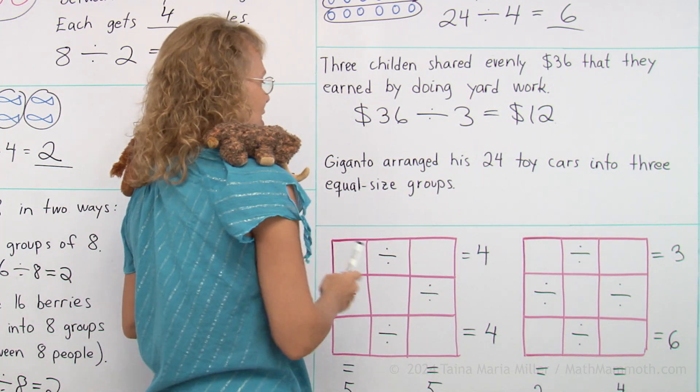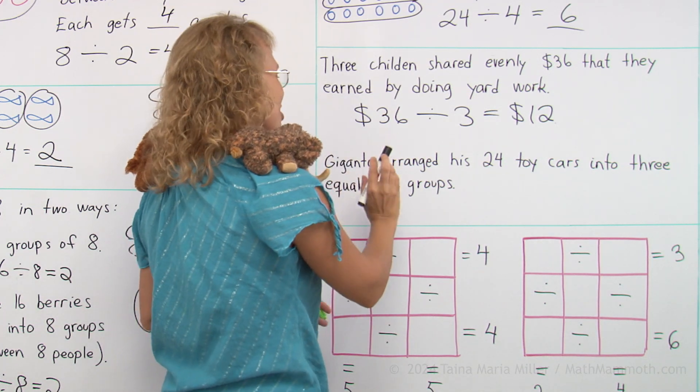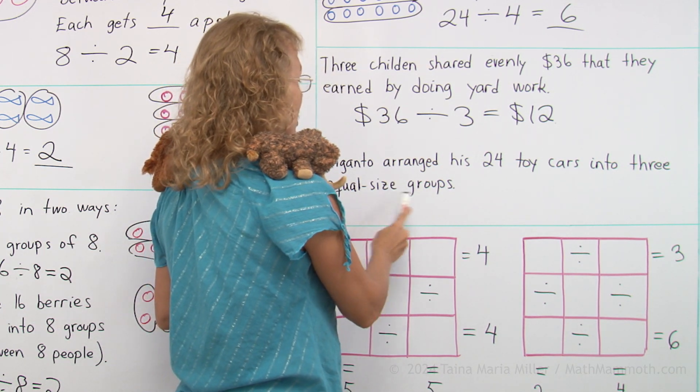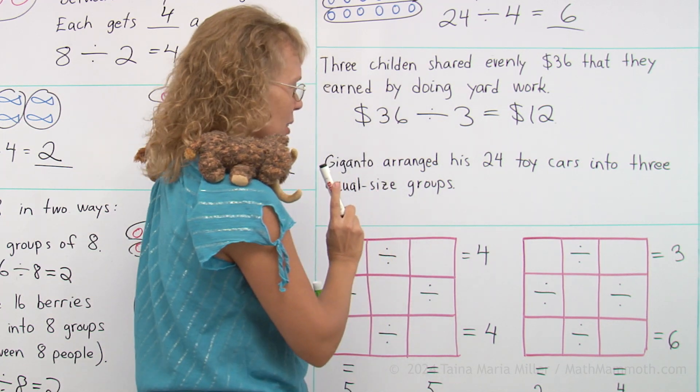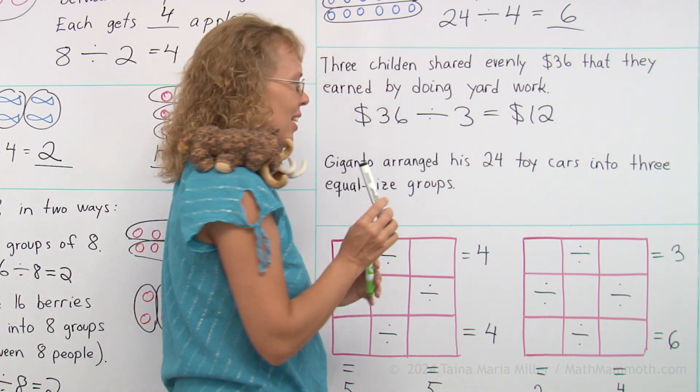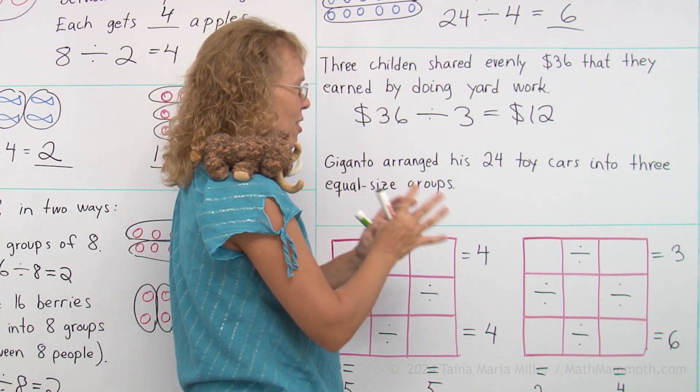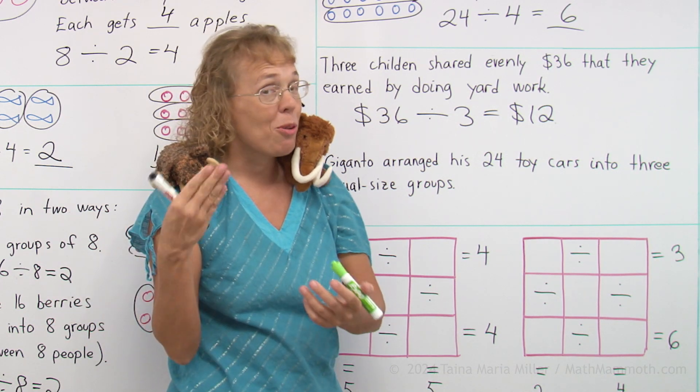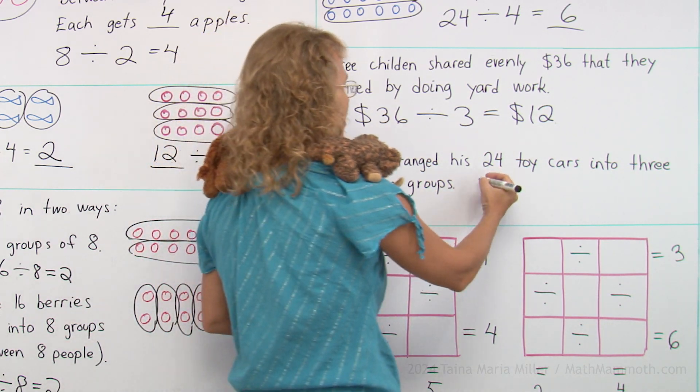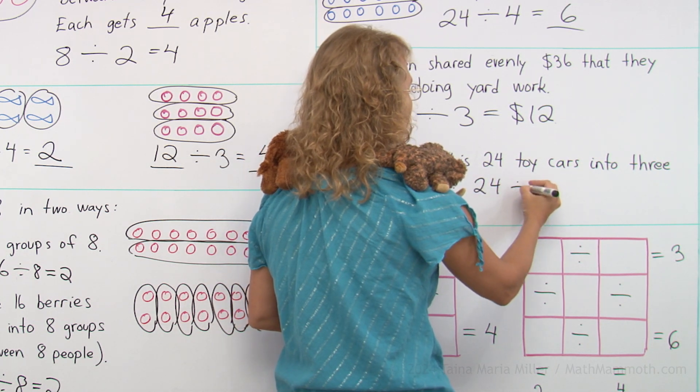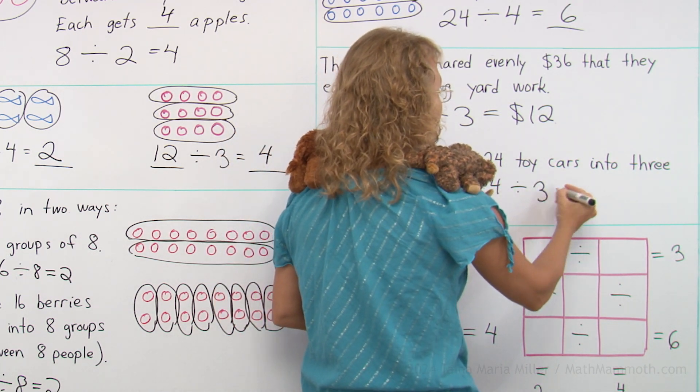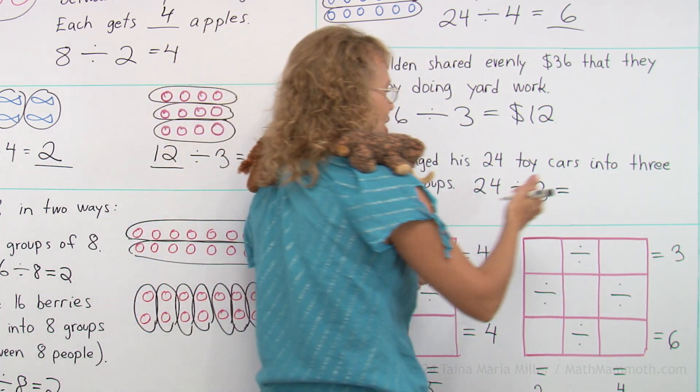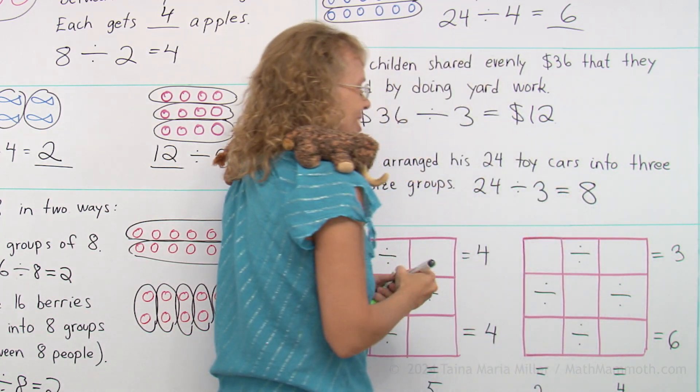Giganta, another word problem about you. Giganta arranged his 24 toy cars into 3 equal size groups. What shall we ask in this word problem? He has 24 toy cars, he is going to arrange them into 3 groups, 3 piles. So how many in each pile? It is a division word problem, so we write a division: 24 divided by 3. Now can you solve it, Giganta? He could. Yes, 8. 8 cars in each group.